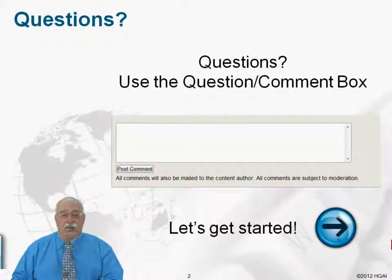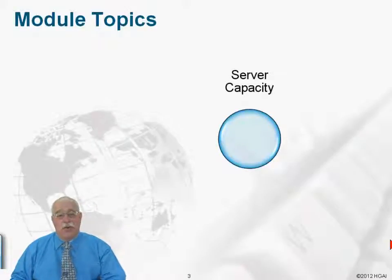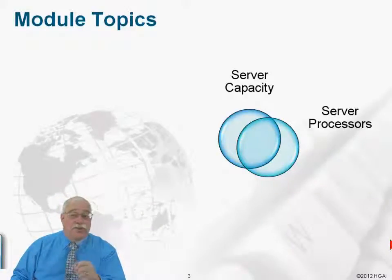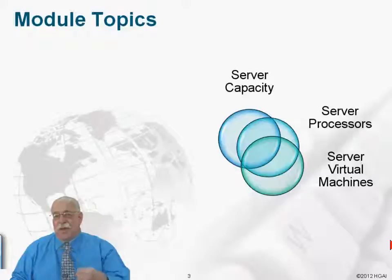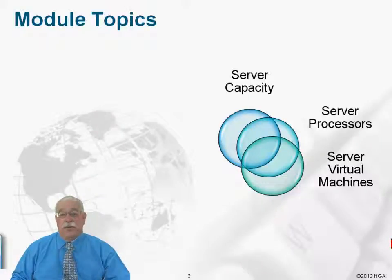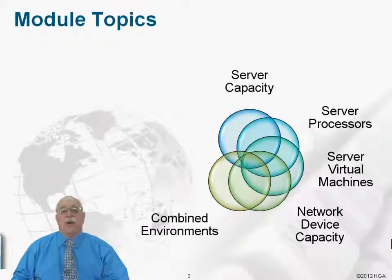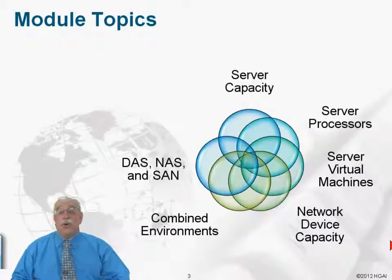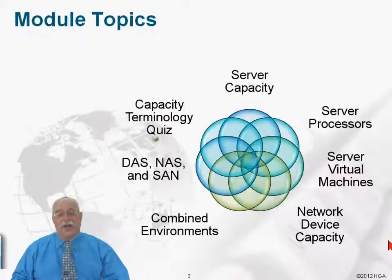Remember to use the question comment box if you have questions. The topics in this module focus on what makes up capacity from a server perspective — server processors and multi-core, taking advantage of processing capability using multiple virtual machines and applications. Then we'll talk about network devices, adapters, and the interconnecting infrastructure, and the combined environments that make up DAS, NAS, or SAN. We also have a terminology quiz with this module.